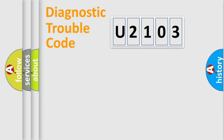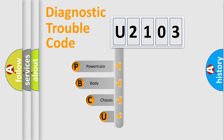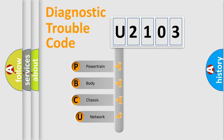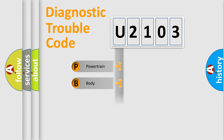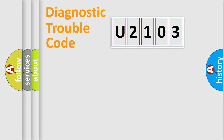Let's look at the history of diagnostic fault code composition according to the OBD-II protocol, which is unified for all automakers since 2000. We divide the electric system of an automobile into four basic units: powertrain, body, chassis, and network.